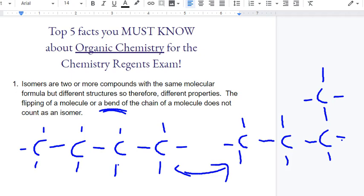So first thing is to count the longest chain. They're both four. They both would have the same number of hydrogens, but the structures are the same. Don't get tricked or fooled by a bend or a flip.